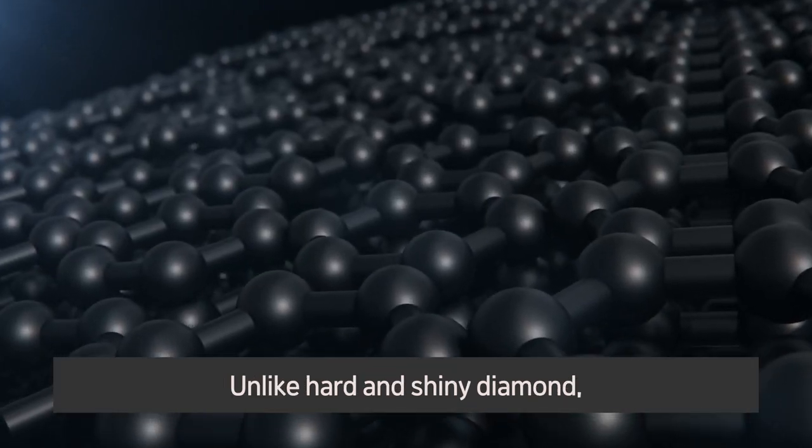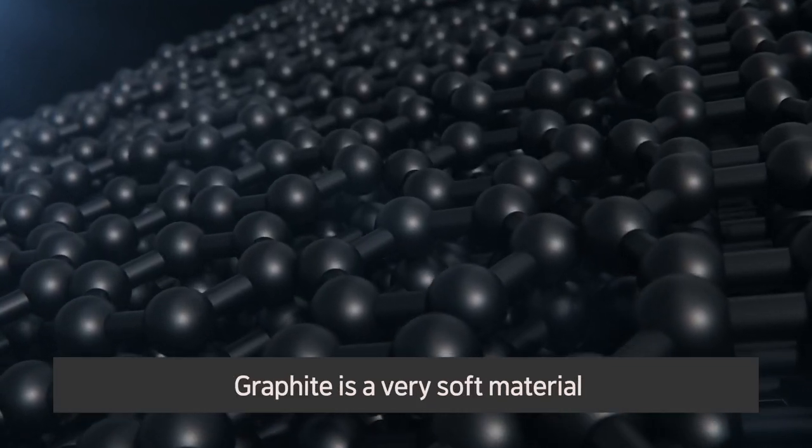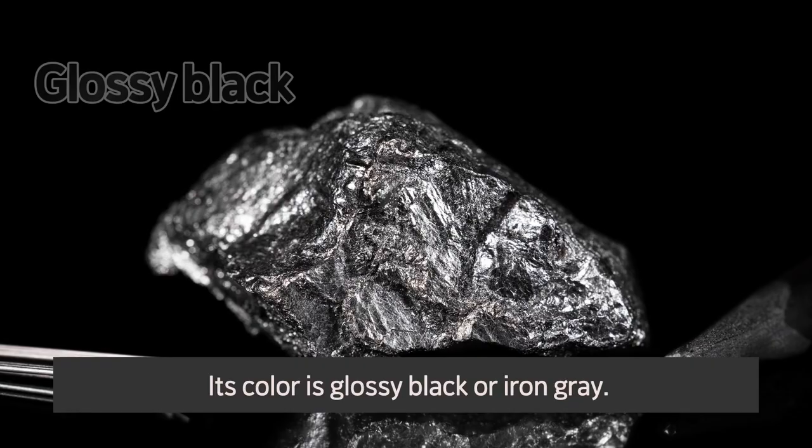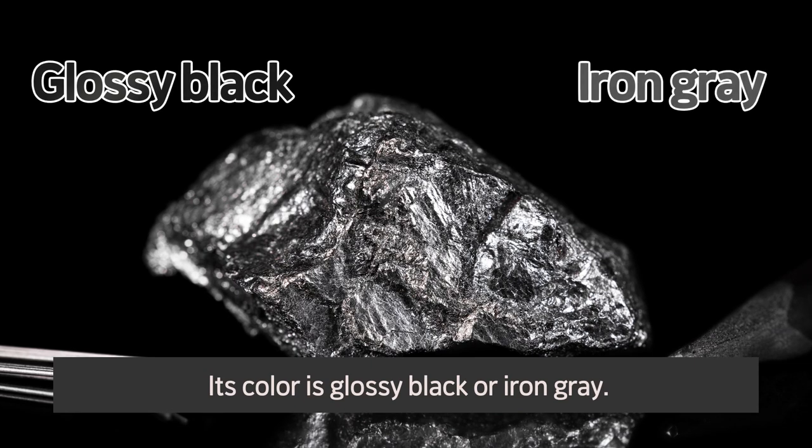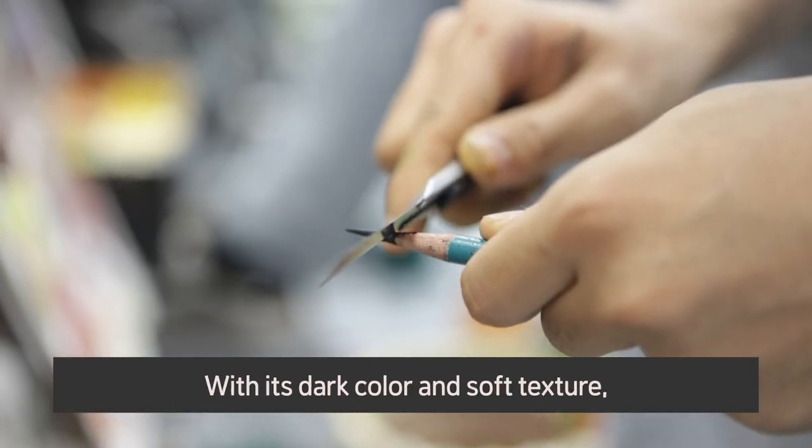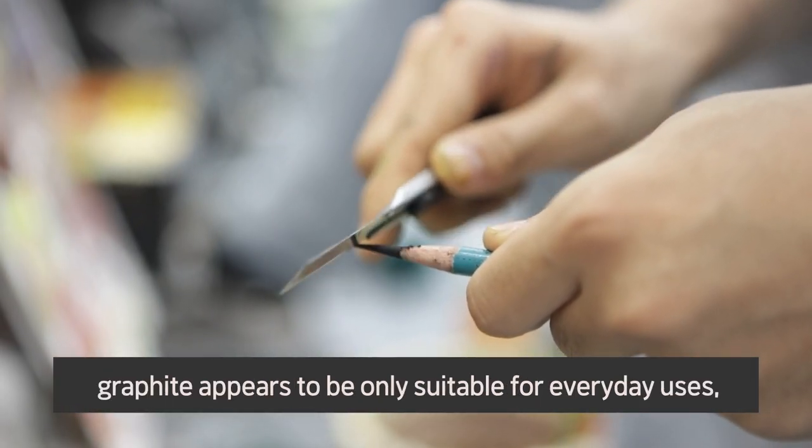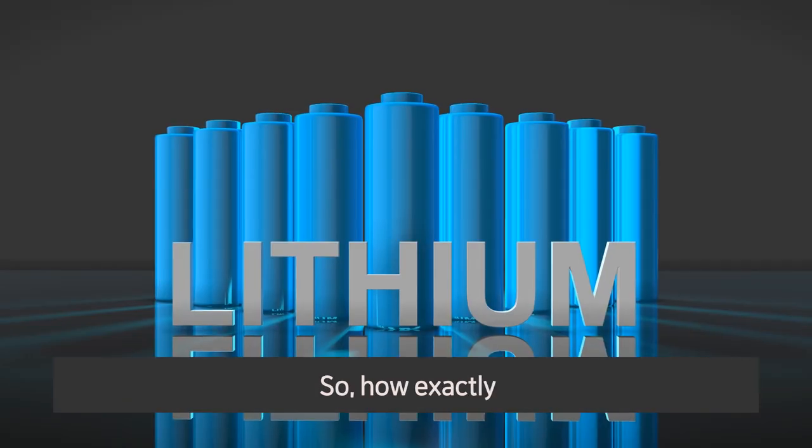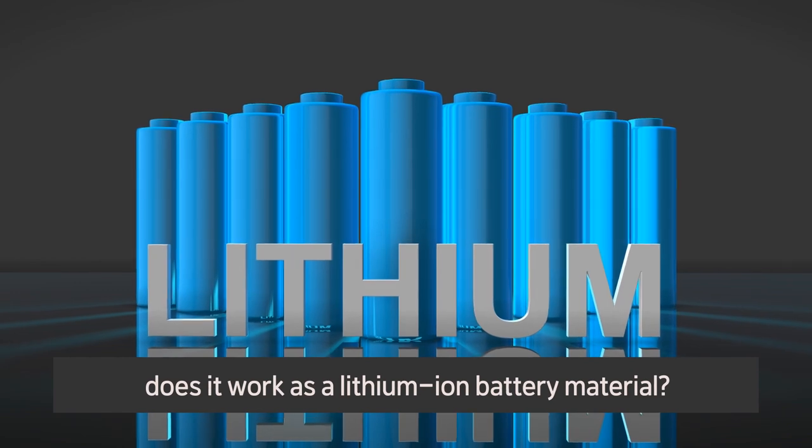Unlike hard and shiny diamond, graphite is a very soft material with 1.5 hardness and 2.23 specific gravity. Its color is glossy black or iron gray. With its dark color and soft texture, graphite appears to be only suitable for everyday uses, such as pencils. So, how exactly does it work as a lithium-ion battery material?